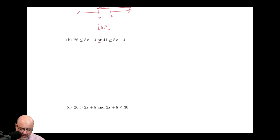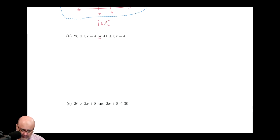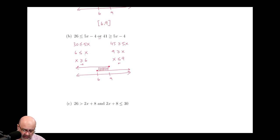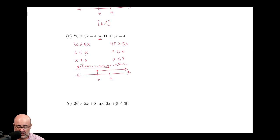For the next one, it's actually the same exact problem — all I did was change the word AND to OR. So the graph is going to be read differently: 6 to the right, 9 to the left. Because this is an OR problem, we're asking where are we covered — where do we have coverage from the rain? If there's rain falling all over the place, I'm protected everywhere; I can walk from the left side to the right side without getting wet. So my interval would be negative infinity to infinity.